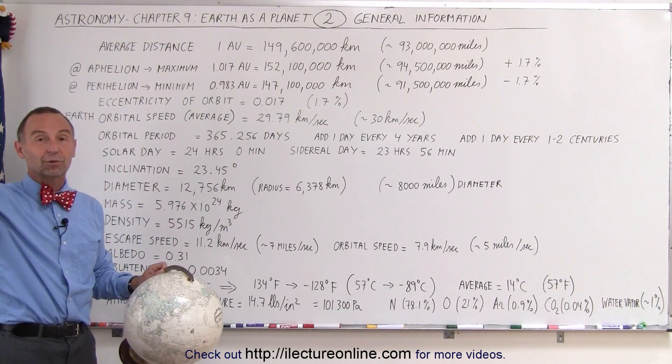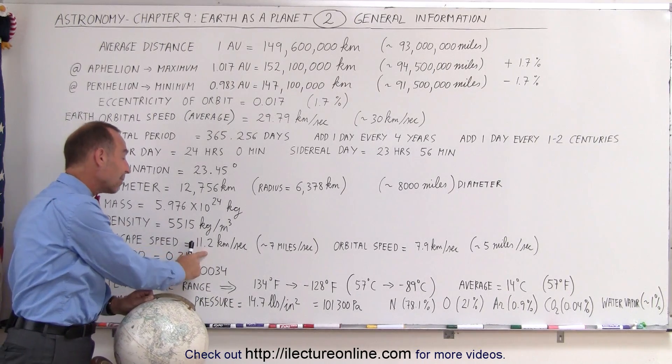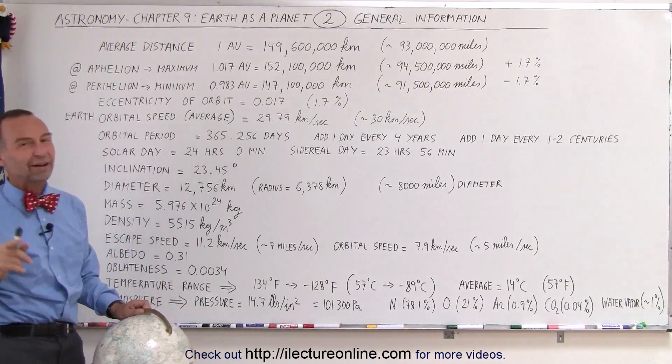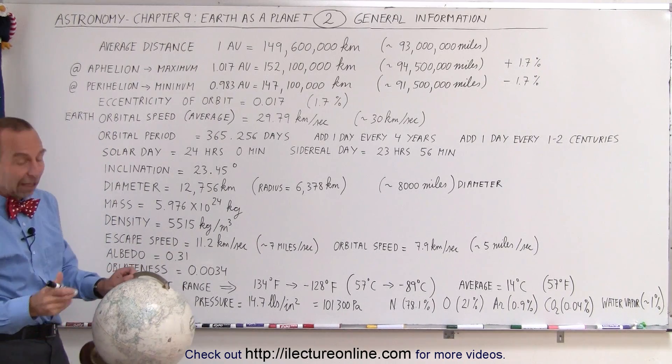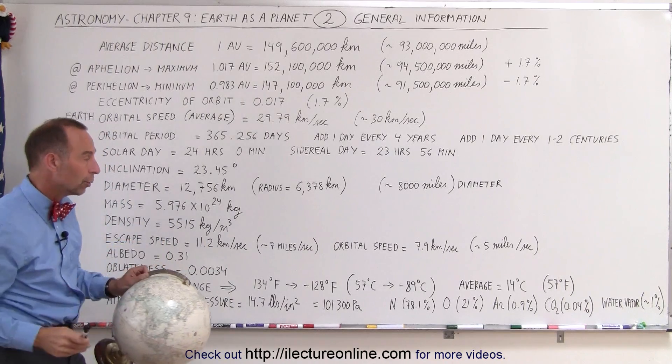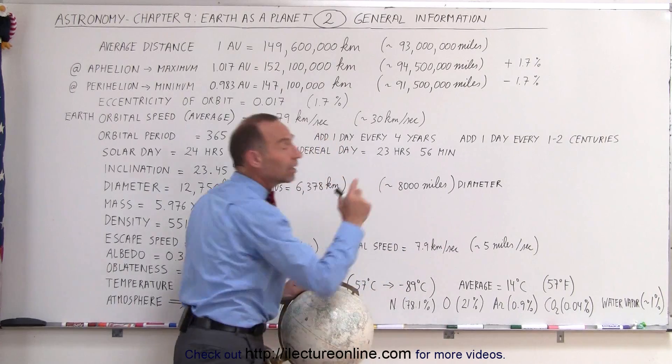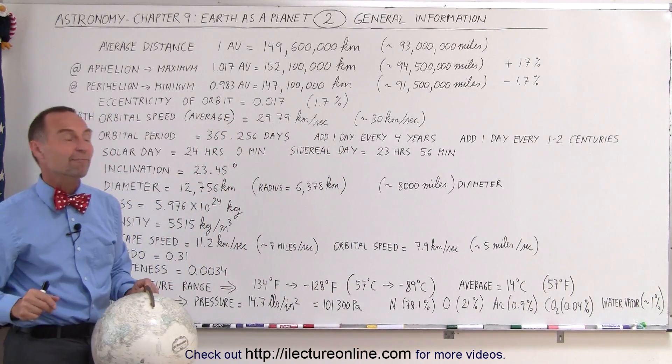So to get away, the escape speed, you must travel at least 11.2 kilometers per second. If you just want to get into an orbit around the Earth, into a low orbit, the orbital speed of the spacecraft needs to be about 8 kilometers per second, which is about 5 miles per second.